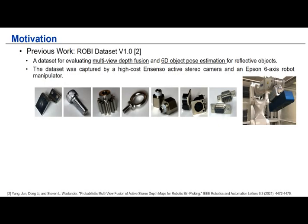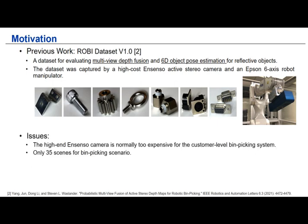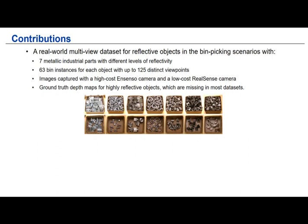Because of these issues for reflective objects, in our previous work we proposed a multi-view depth fusion approach to overcome this problem. To evaluate our approach, we created the Robi dataset version 1.0, which includes seven industrial shiny objects captured with a high-cost camera at multiple viewpoints. However, the high-cost camera is normally too expensive for a consumer-level bin picking system. In this work, we expand our Robi dataset to include more scenarios with an additional low-cost RealSense sensor.